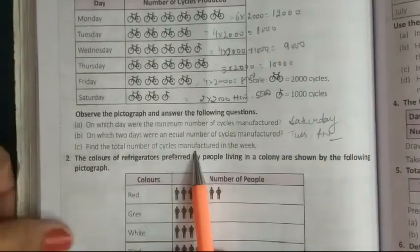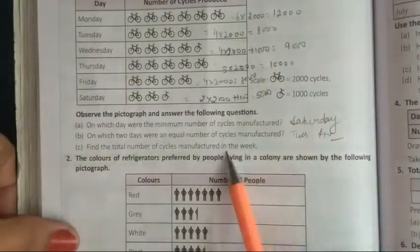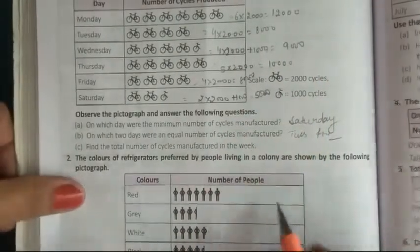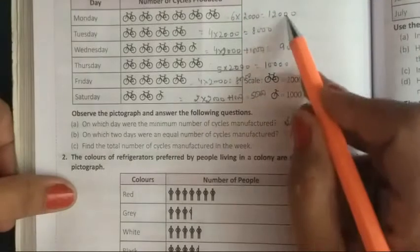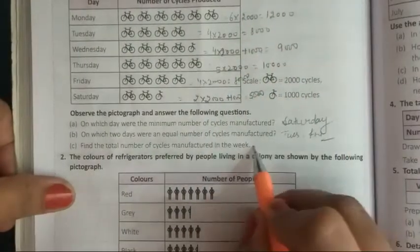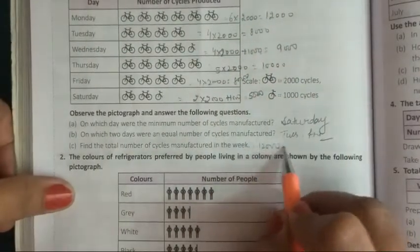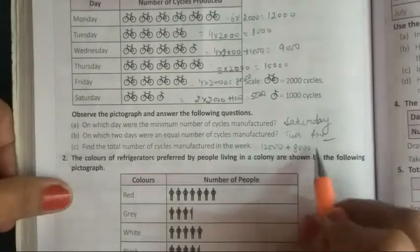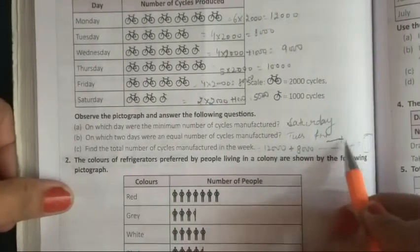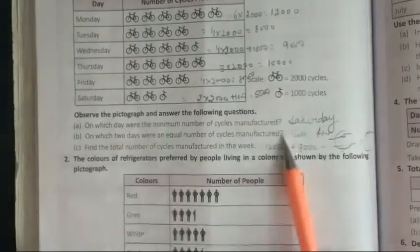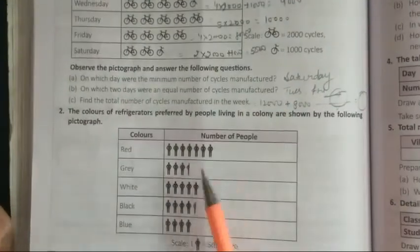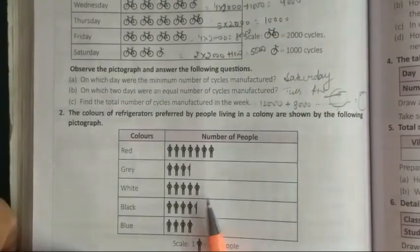Find the total number of cycle. Total number of cycle, complete week me kitni hoi hai, woh hum yaha count karna hai. To hum kya karengi? Ye number of cycle hai, in sab ko hum is tarah se likhenge, aur in sab ko jo bhi number hai, in sab ko kya karo ge, aap add kar do ge. To yeh aap ko khud karna hai. Isi tarah se next wala hai. To isko dekho kaisa karna hai aapko.